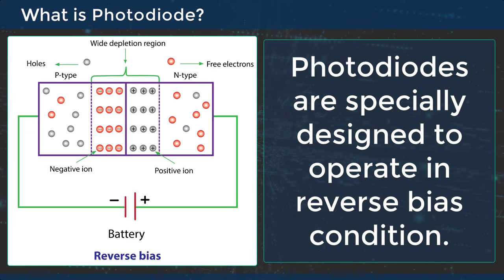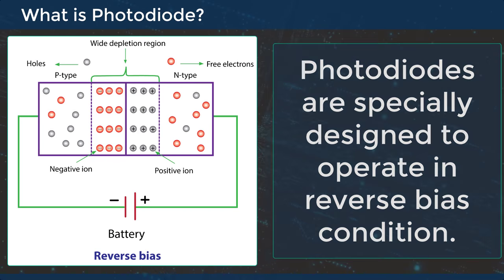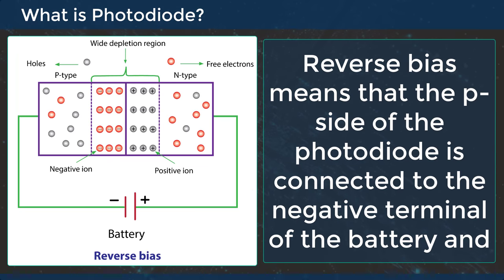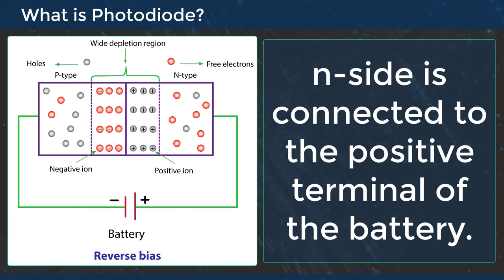Photodiodes are specially designed to operate in reverse bias condition. Reverse bias means that the P side of the photodiode is connected to the negative terminal of the battery and the N side is connected to the positive terminal of the battery.